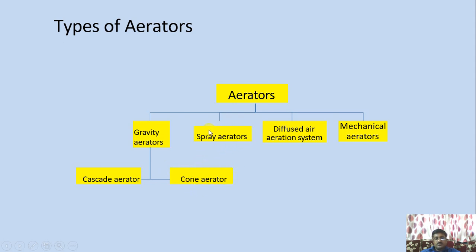If a nozzle system is used to spray the water, those are called spray aerators. In the diffused air system, porous pipes are introduced so that compressed air can be introduced into the water — that is the diffused air aeration system. Sometimes stirrers are used in terms of baffles or other configurations, and that is called mechanical aerators, which are run using a pump.